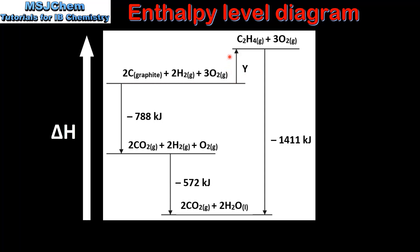Note that this arrow is pointing in the upwards direction which means it has a positive enthalpy change. Next we look at the two arrows pointing downwards. The first arrow represents the combustion of two moles of carbon to form two moles of carbon dioxide. To calculate this enthalpy change we multiply the enthalpy change of combustion of carbon by two to give us negative 788 kilojoules. The next arrow represents the combustion of two moles of hydrogen to form two moles of water. To calculate this enthalpy change we multiply the enthalpy change of combustion of hydrogen by two to give us negative 572 kilojoules.